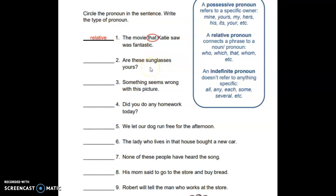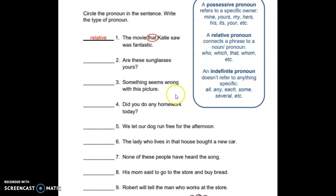Number two: 'Are these glasses yours?' When you think about it, this is talking about possession — the glasses belong to someone. So 'yours' would fall under possessive pronouns, and you will circle 'yours.'